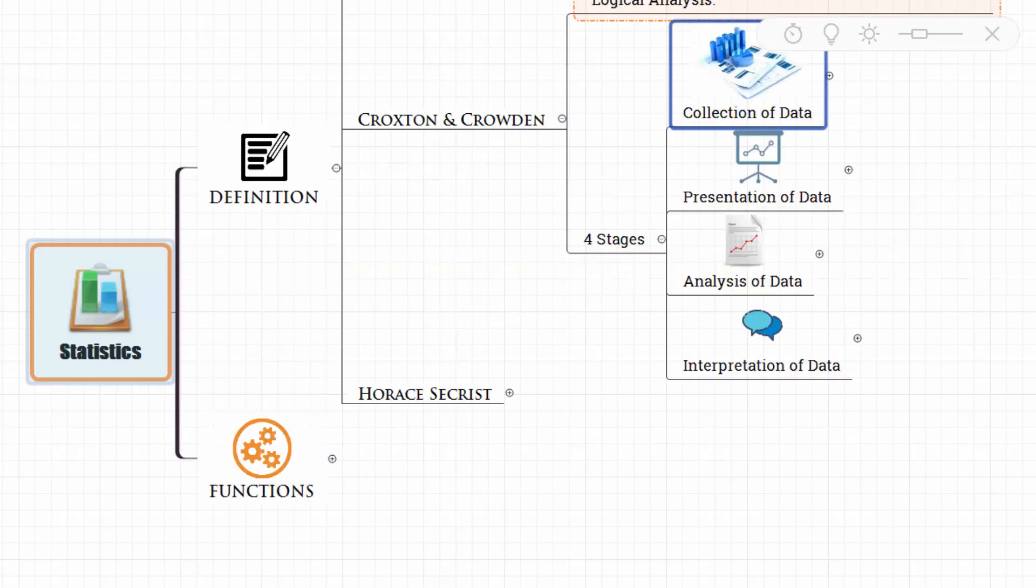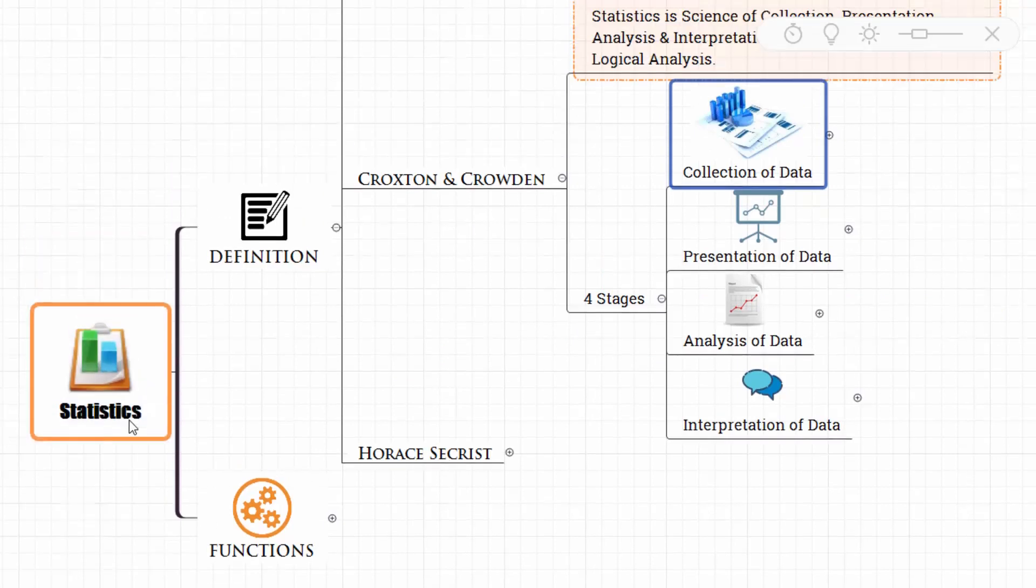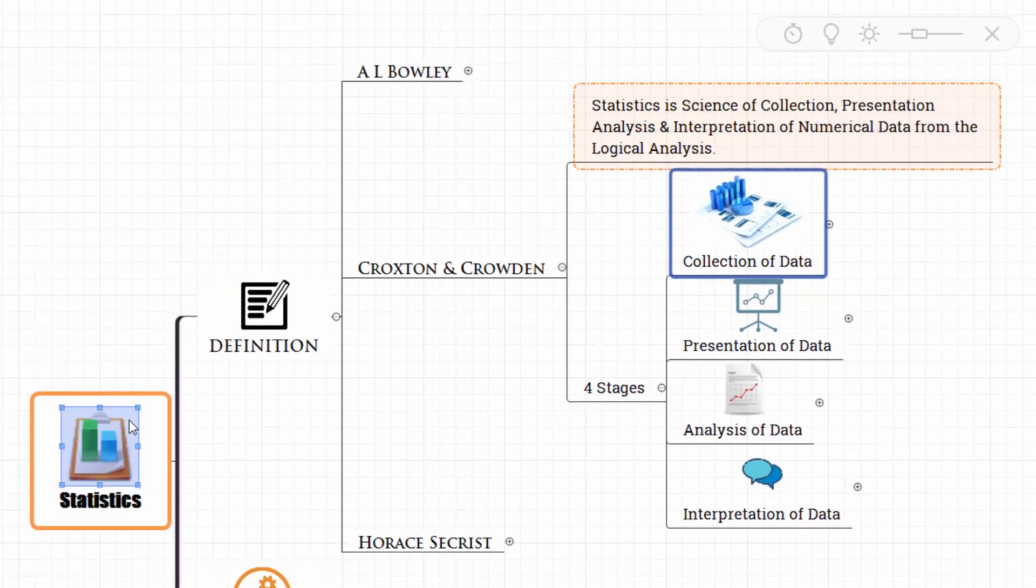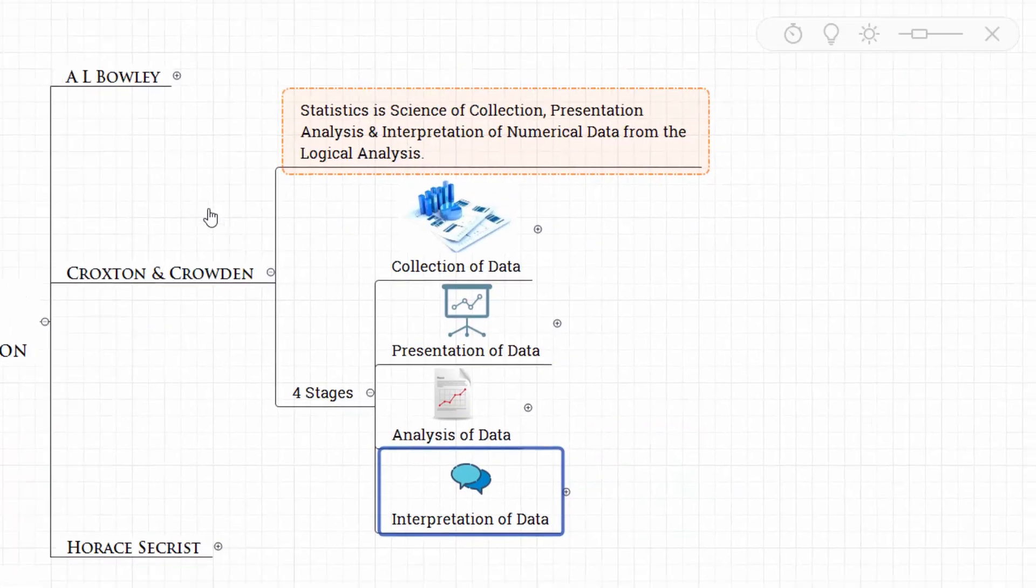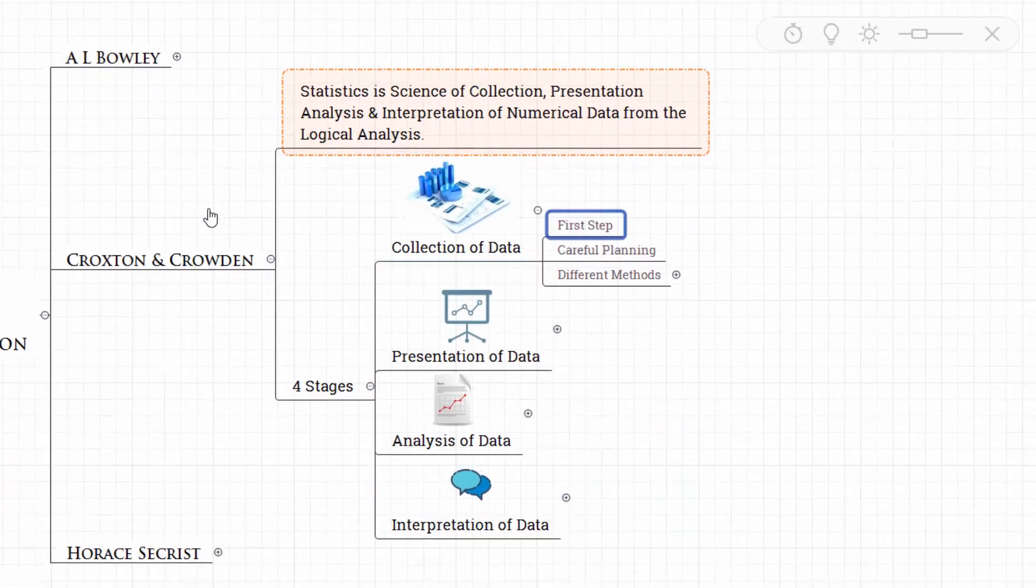Number one, it has collection of data. Number two, presentation of data. Number three, analysis of data. And number four, interpretation of data. Let's see one by one. Now when we say collection of data, it's actually the first step and careful planning is required.